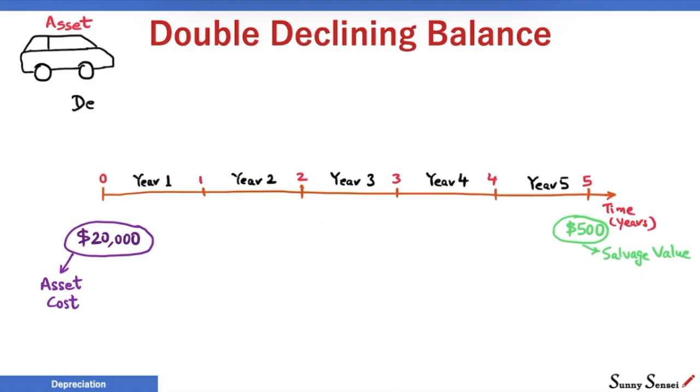We start with depreciation rate. Our car will last 5 years. If we depreciate 100% of the initial value in 5 years at a constant rate, depreciation per year has to be 20% per year. The calculation is simple. It is 1 divided by useful life of the asset. 1 divided by 5 is 0.2 or 20%, but we are dealing with double declining balance. Double is a keyword. In this approach we double the rate.